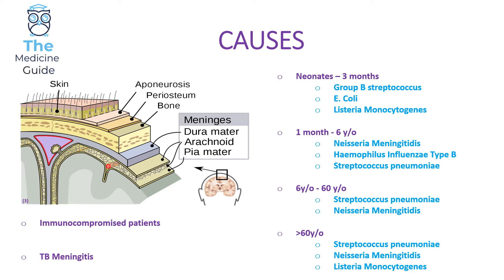I would strongly recommend that you learn the underlying infective organisms that lead to meningitis, because it's something they can easily throw into an SBA. They can give you a generic description of a patient aged perhaps seven years old, and you'd be expected to pick the most likely infective organism. This is very high yield — please be aware of what the underlying causes are of meningitis.